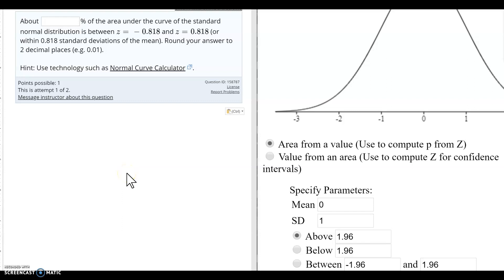For this question, we're still working with the normal curve. We're using z, so remember that means the mean is equal to zero and the standard deviation is equal to one. So this is going to be my standard normal distribution.